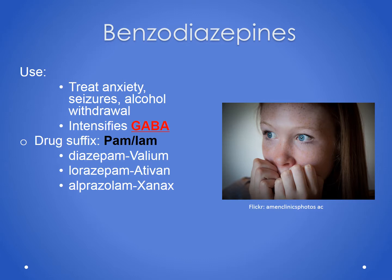Benzodiazepines have a calming effect on patients. This class of medications intensifies GABA, quieting the nerves. We use these medications for anxiety, seizures, and also for alcohol withdrawal. The drug suffix for these meds is PAM — so when you see PAM on the end of a generic drug name, you know it's a benzodiazepine. Diazepam is the generic for Valium, and lorazepam is the generic for Ativan.